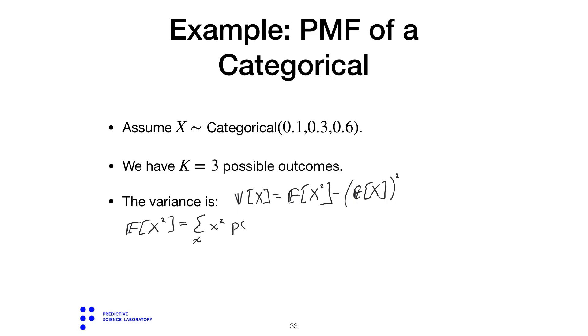This is c1 squared times 0.1 plus c2 squared times 0.3 plus c3 squared times 0.6. You already have the expectation of X, so now you can plug everything into the formula that gives the variance and calculate the variance.